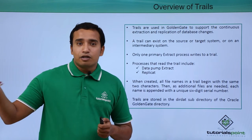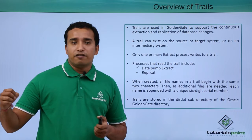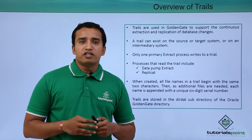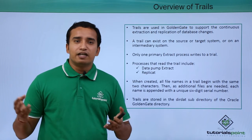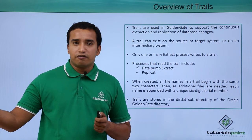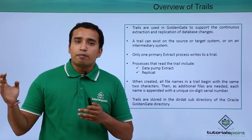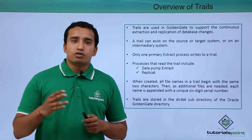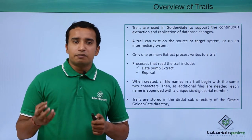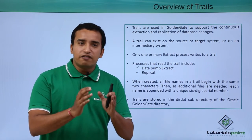At the target site, the replicate process reads the same trail file and replicates the data into the system. The purpose of this trail file is basically to have data consistency. If the data is being directly transferred over the network and there are any network issues, the data may not be properly propagated. To overcome such issues, you use trail files, wherein the change capture — the redo capture data — is stored in the trail file safely and securely.